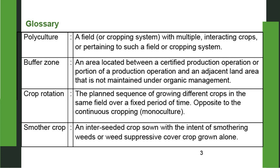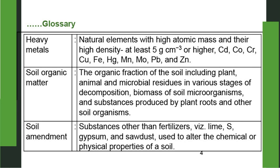Crop rotation: the planned sequence of growing different crops in the same field over a fixed period of time; it is opposite of continuous cropping. Monoculture: where you grow one kind of crop year after year. Smother crop: an interseeded crop sown with the intent of suppressing weeds, or a weed-suppressive cover crop grown alone. Heavy metals: natural elements with high atomic mass and high density.